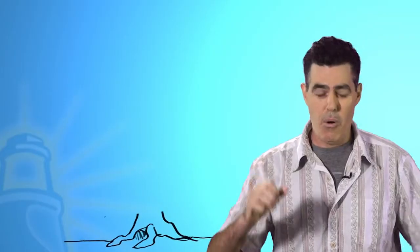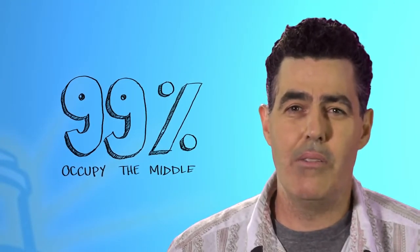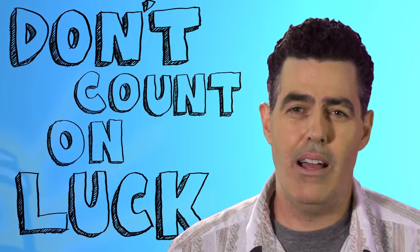So your dad could own a Ferrari dealership. That would put you at the top. Or you could be born without your limbs. That would put you on the bottom. But then there's the middle. And the middle is where 99% of us reside. And what I'm trying to tell you is don't count on luck.